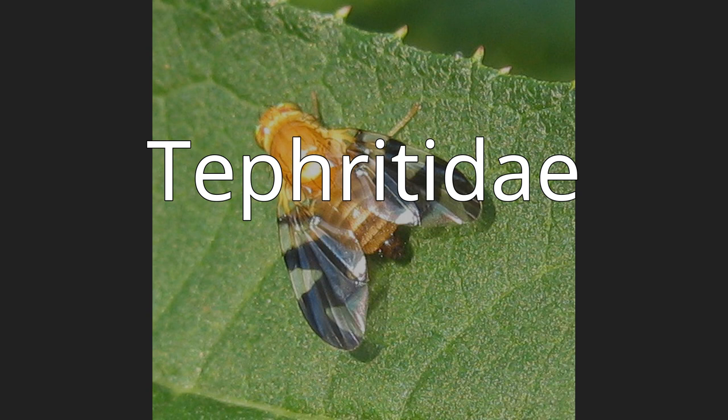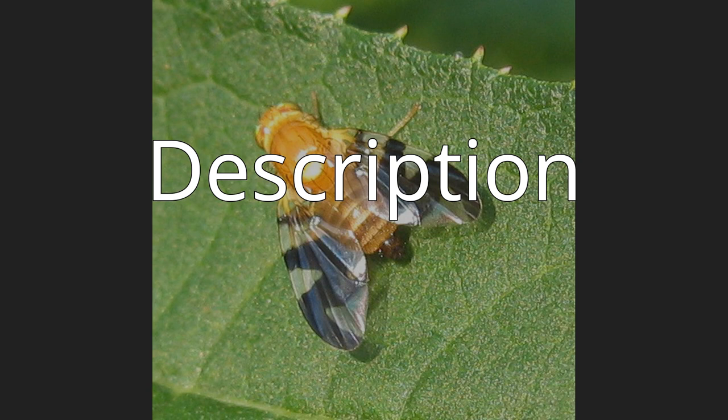They are found in all the biogeographic realms. For terms see morphology of Diptera and Tephritidae glossary. Tephritids are small to medium-sized, 2.5–10 mm flies that are often colorful and usually with pictured wings, the subcostal vein curving forward at a right angle.